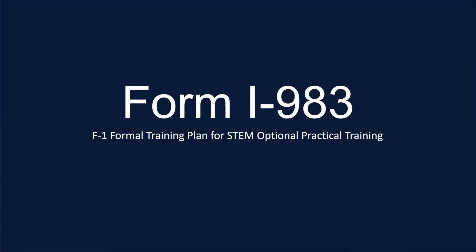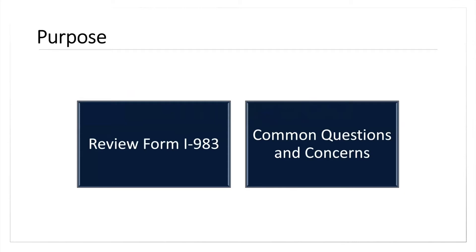Welcome to our instructions for Form I-983. Form I-983 is the formal training plan required when applying for the STEM Optional Practical Training Extension. In this discussion, we're going to be talking about the form itself, reviewing some major issues or questions that students commonly have, as well as some general information about the form and reporting.